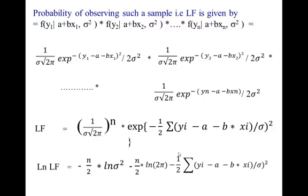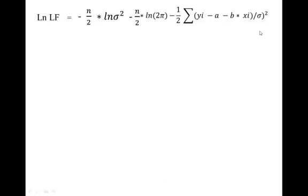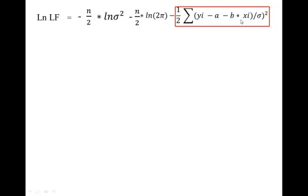Taking the log of the likelihood function — to simplify the mathematics — we get an equation with an n/2 term. The key observation is that the term (Y_i - Y_bar)^2, where Y_i is the observed value and Y_bar is the predicted value Y_hat, is nothing but the squared error. So this log-likelihood contains the sum of squared errors, which is the same quantity minimized by OLS.